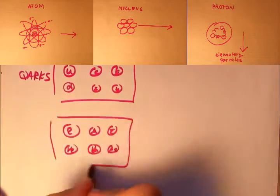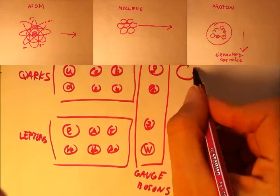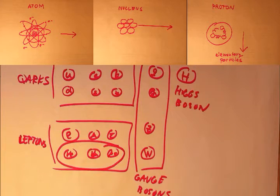They are similar to their partners: the electron, muon, and tau particles. However, neutrinos are electrically neutral. Therefore, the electromagnetic force does not act on them.